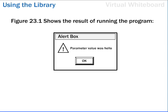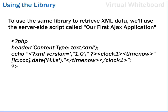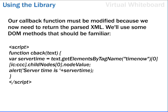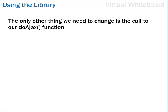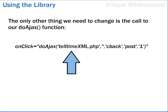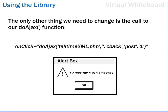This figure shows the result of running the program. To use the same library to retrieve XML data, we'll use the server-side script called our first Ajax application, which delivers the current server time in a small XML document. Our callback function must be modified because we now need to return the parsed XML. We'll use some DOM methods that should be familiar. The only other thing we need to change is the call to our doAJAX function. Here, we have decided to make a POST request. Our server-side script, telltimexml.php, does not require a query string, so the second argument is left blank. The final parameter has been set to 1, indicating that we expect the server to respond with XML in the property responseXML. This example shows the result of running the program.